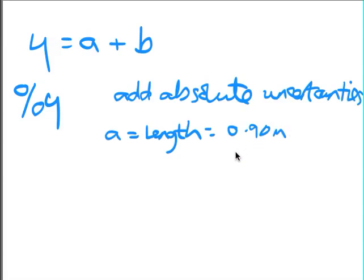So that would be 0.90 plus or minus 0.01 metres measured to the nearest centimetre. So the 0.01 is the absolute uncertainty.